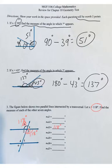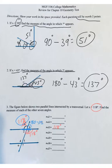Looking at the top corner, angles 1 and X sit on top of a straight line, just like in question 2. So 180 minus 118 gives 62 degrees for angle 1. And since vertical angles are the same measure, angle 2, directly across from angle 1, must also be 62 degrees. That completes the four angles at the top intersection.